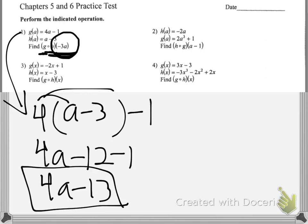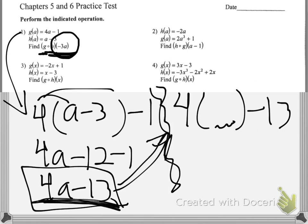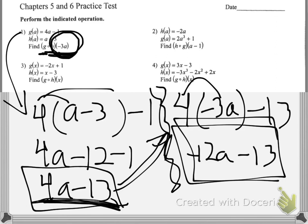Now I know what the composite function looks like: it's 4 times something minus 13. I'm just plugging in what they gave me — negative 3a. So instead of a, we put negative 3a in there. 4 times negative 3a is negative 12a, then take away 13. That's the answer for number one.